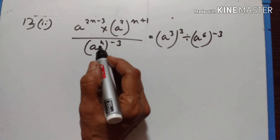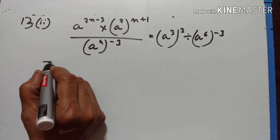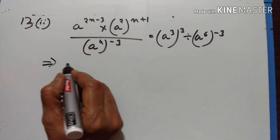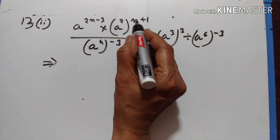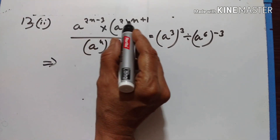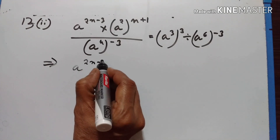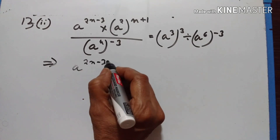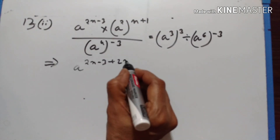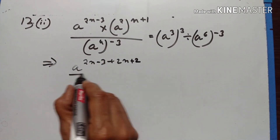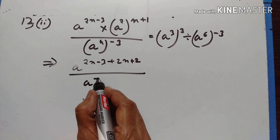We have to find the value of n here. 2 into n plus 1 is equal to 2n plus 2. Let us add the powers: a to the power of 2n minus 3, plus 2n plus 2, upon a to the power of minus 12.